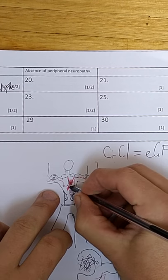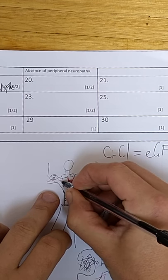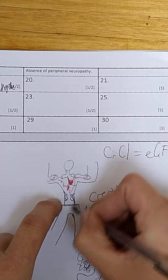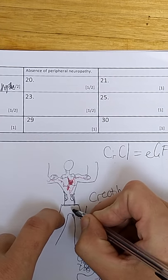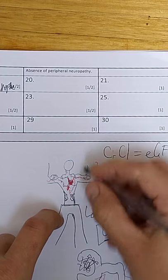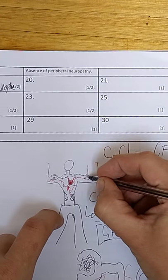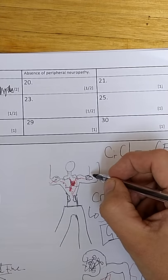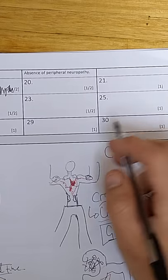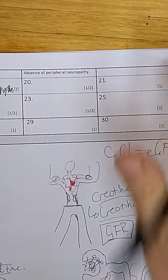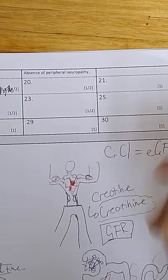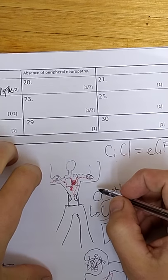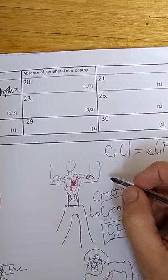So if the creatinine starts building up in the blood, it means that either the kidneys aren't working and we aren't excreting as much creatinine as normally, or for some reason our muscle is making more. There's only one condition, but you'd never have to know about it, so it doesn't matter. So most likely is the kidneys.